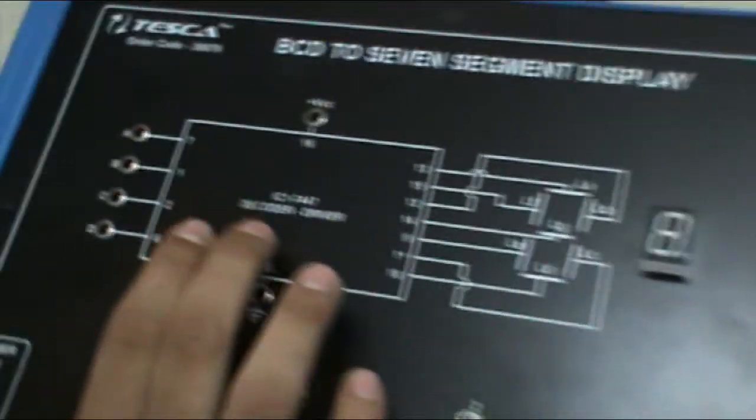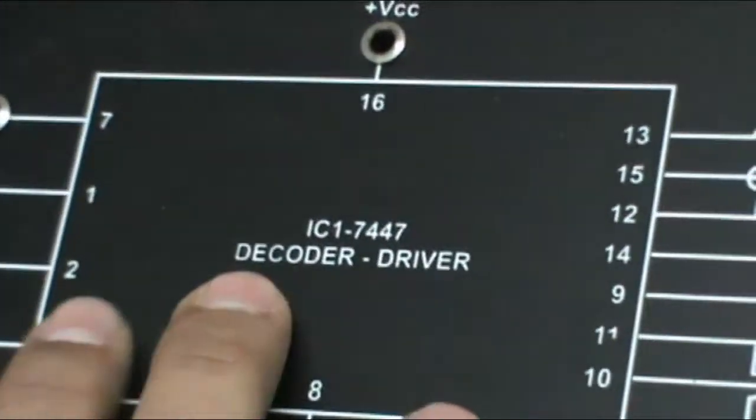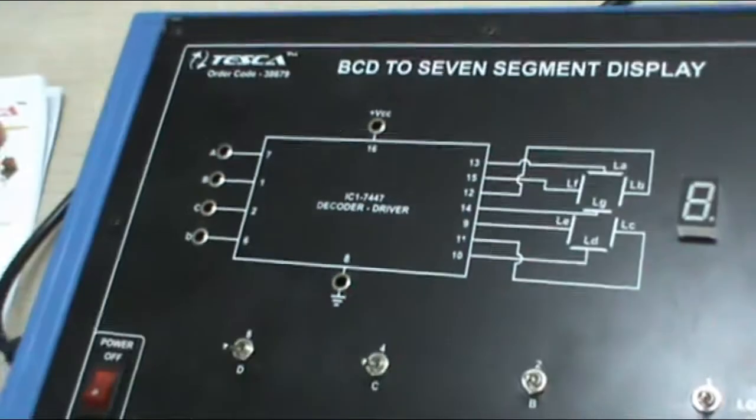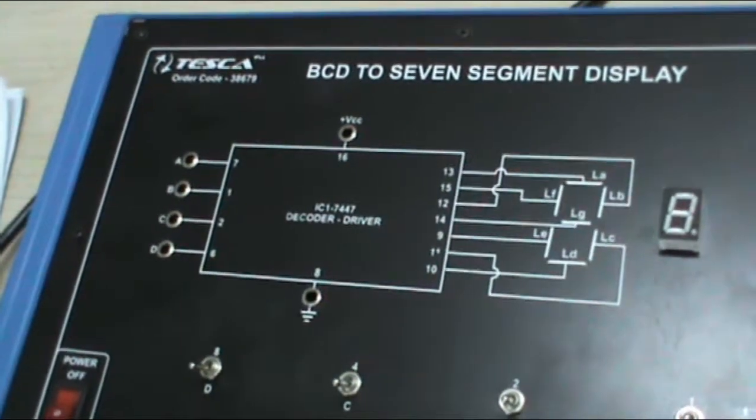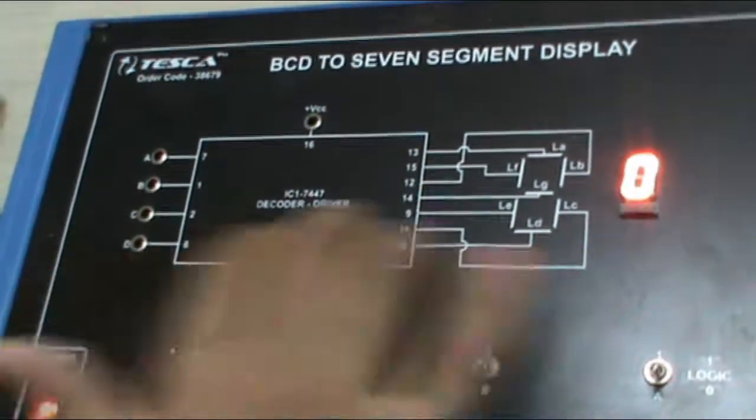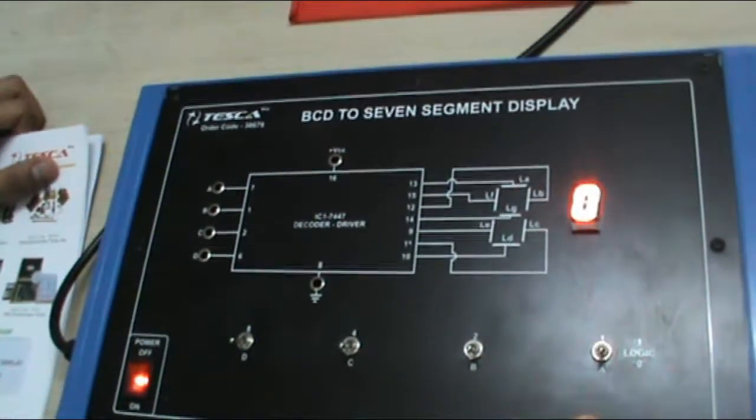This is the IC 7447 decoder driver. Now in order to display BCD on the 7 segment display, first of all switch on the main power. In this we don't have to make any connections. We just have to give the 4 inputs.